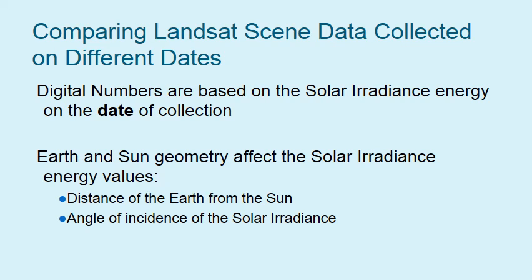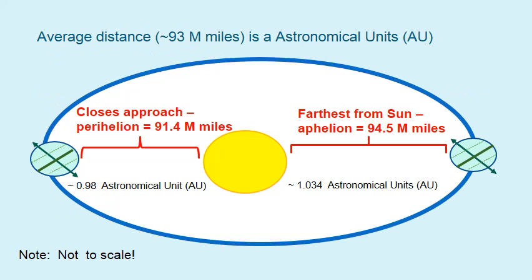Why would we want to know about the digital number or converting and correcting these? The digital numbers are based on the solar irradiance energy on the date of collection, and the Earth-Sun geometry affects how much solar energy is available. These two geometries are the distance of the Earth from the sun and the angle of incidence of the solar irradiance. The average distance from Earth to the sun is 93 million miles, represented as one astronomical unit. When we're closest to the sun we're less than one astronomical unit, and farthest we're at 1.034 astronomical units. Note that this schematic is not to scale.